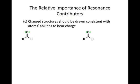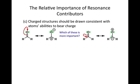The third thing to keep in mind is that charge structures should be drawn that's consistent to the atoms' abilities to bear that charge. So for example, we have formaldehyde shown here, the double bond between a carbon and an oxygen. We have two options for where to push those electrons. The first option is to push them up onto the oxygen, put a negative on oxygen and a positive on the carbon.